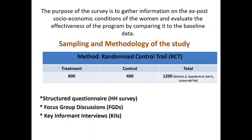The study covered 500 beneficiaries in two districts and 14 upazilas across the country. The tools used include a structured household survey conducted in the field, focus group discussions (FGDs), and key informant interviews (KIIs).